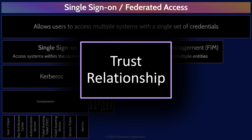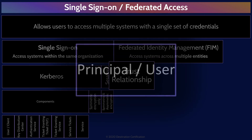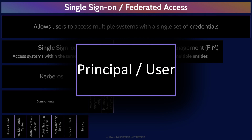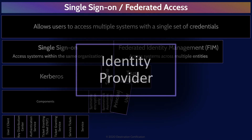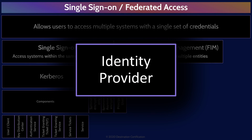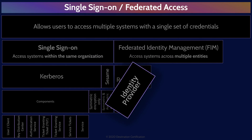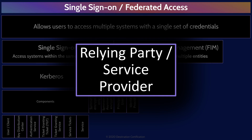Let's dig into these three entities. The first is the user, sometimes also referred to as the principal. The identity provider is the entity that authenticates the user and verifies the user's identity — often this is Active Directory. And finally, the service provider, sometimes also referred to as the relying party, is what the user actually wants access to. This is the cloud-based service or the internal application.